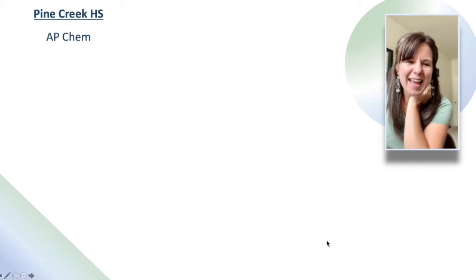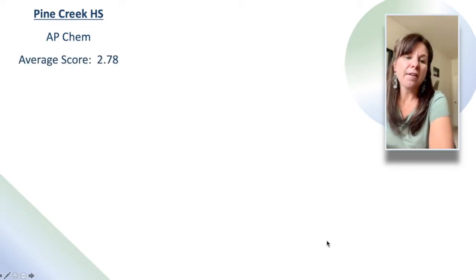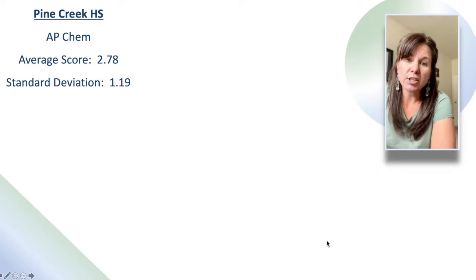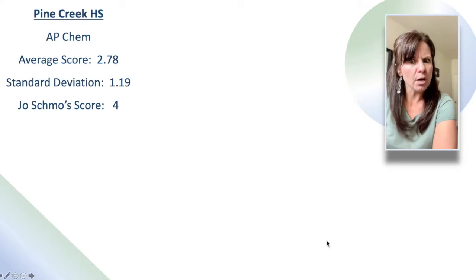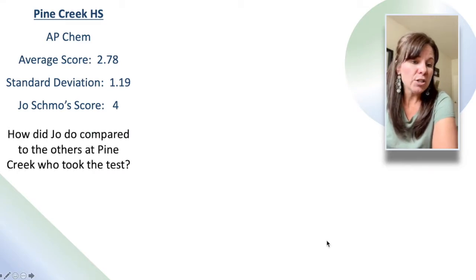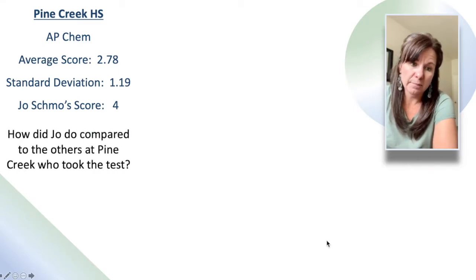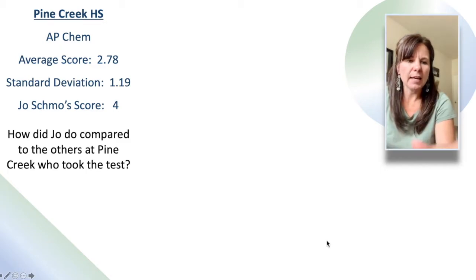So let's say we're at Pine Creek High School and they've just given the AP Chemistry exam. The average score was a 2.78 with a standard deviation of 1.19. Joe Schmoe scored a 4 — good job, Joe. Now how did he do compared to the others at Pine Creek who took the test? Think about that just a second.